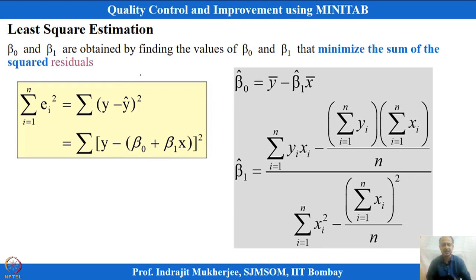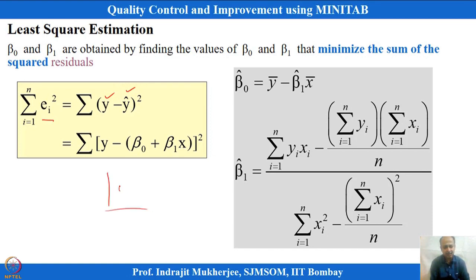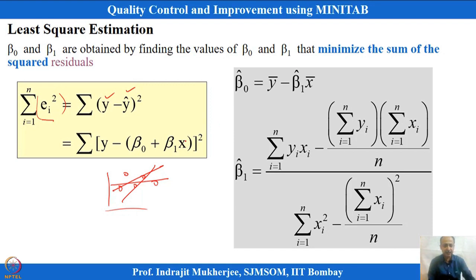Many lines can be constructed from the data. Out of all possible lines, we select the one where the error between predicted and actual values is minimized — this gives the best fit line. Minitab does this automatically. Taking derivatives of the squared error and equating to zero gives the normal equations, which yield the β₀ and β₁ estimates.